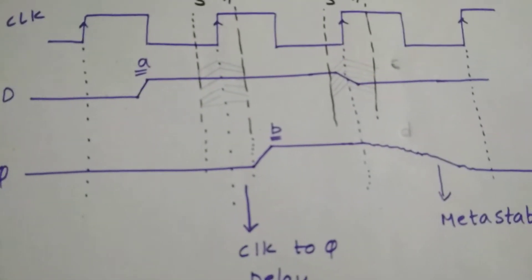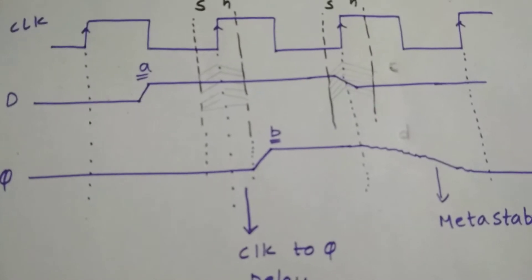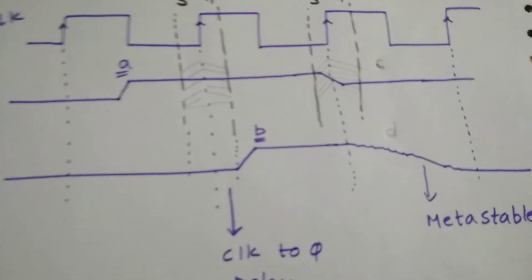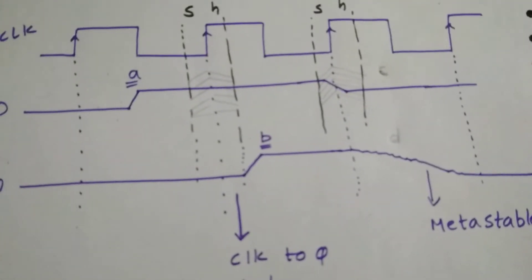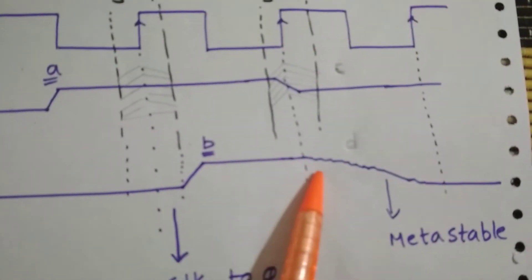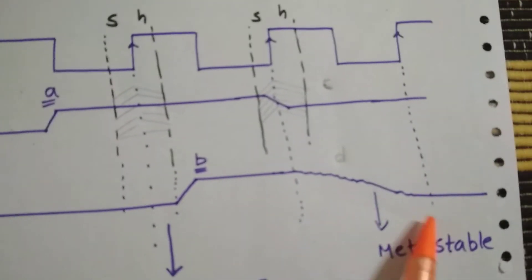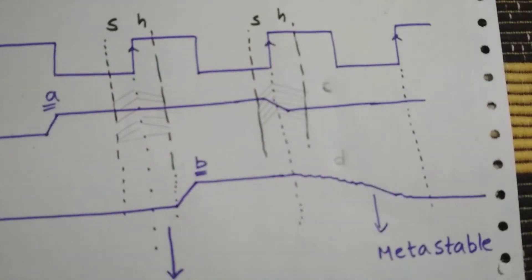Metastable state is a huge problem because we cannot decide if it's 0 or 1. It takes a long time to settle down to a value, almost a clock period to settle down to a single value.